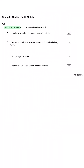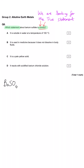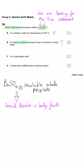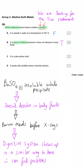Which statement about barium sulphate is correct? A, it is soluble in water at 100°C — that seems plausible but at that temperature water is turning into a gas and probably isn't dissolving anything. B, it is used in medicine because it does not dissolve in body fluids — this is the correct answer. We use it in barium meals to x-ray the digestive system; the barium sulphate won't dissolve inside the patient and it's photo-opaque. C is wrong because barium sulphate is white, and barium chloride would not react with barium sulphate.